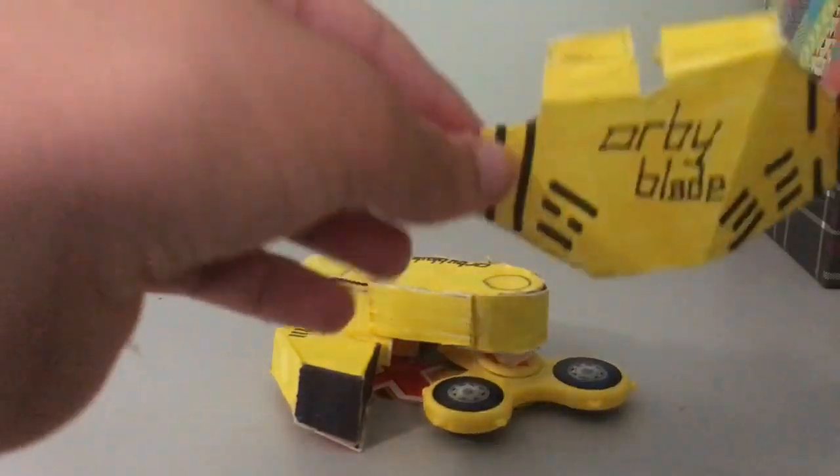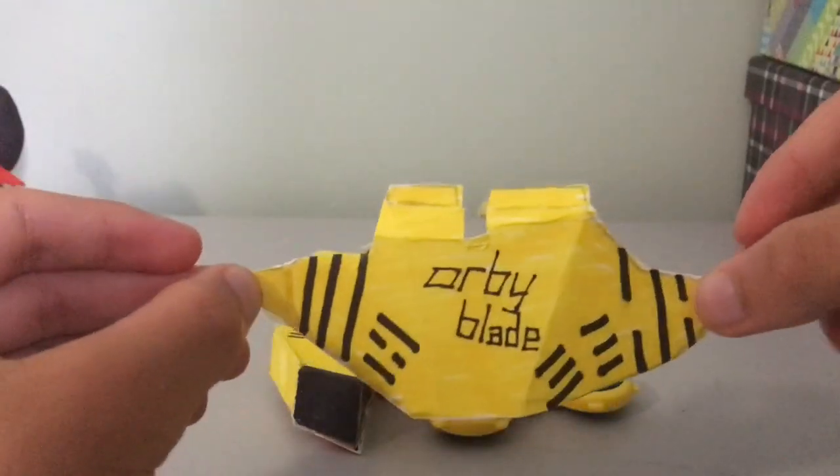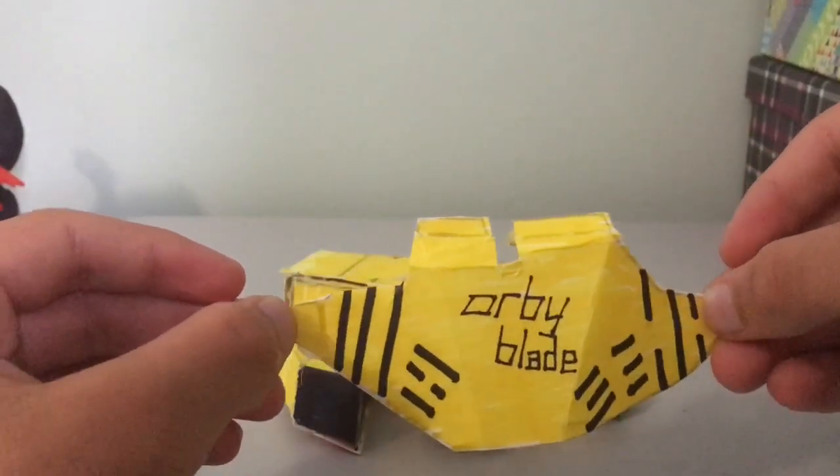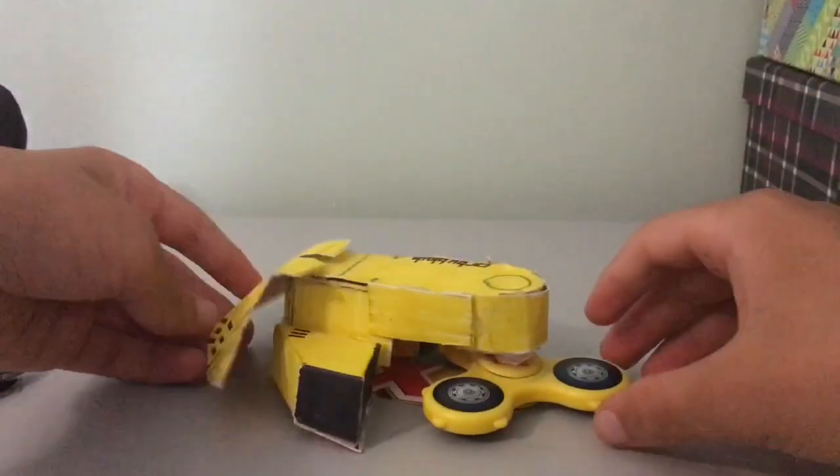If you look on the instructions, you have to draw out the wedge, the rear wedge, the massive rear wedge. And this is what it should look like. It's got the ORBY Blade calligraphy there, and of course the pattern. And that is going to be attached right on the back of ORBY Blade.